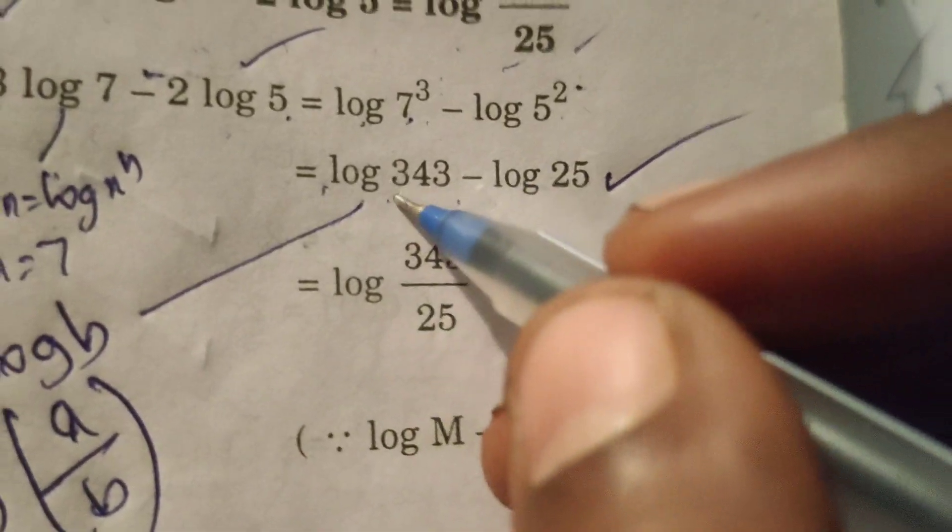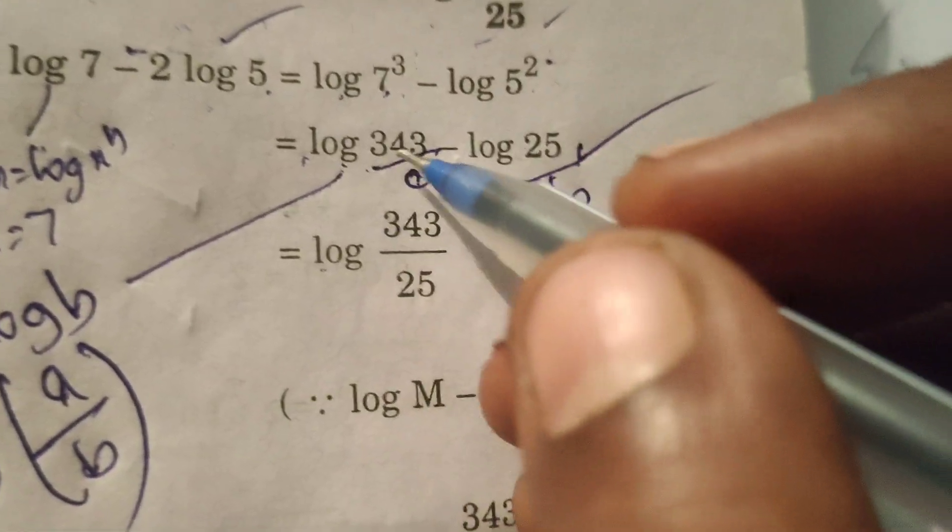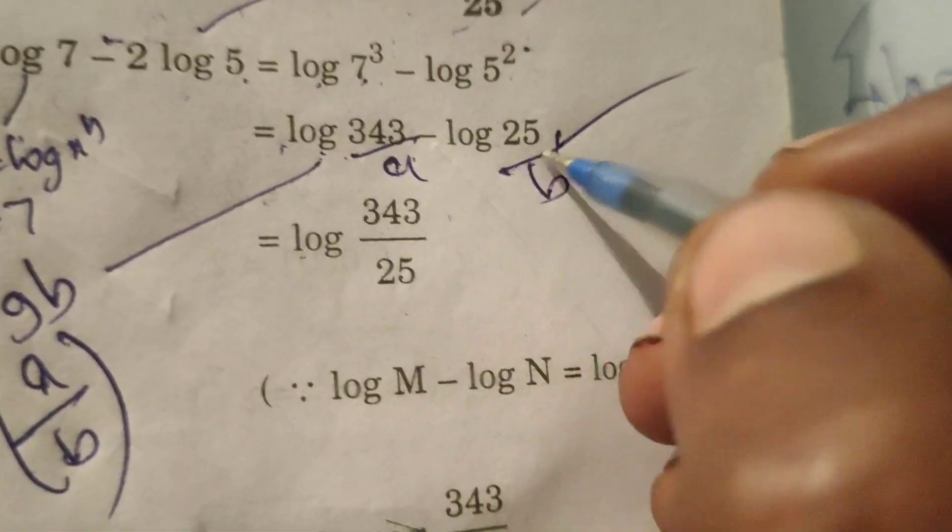Now this is a and this is b. Therefore log a means 343 by b means 25.